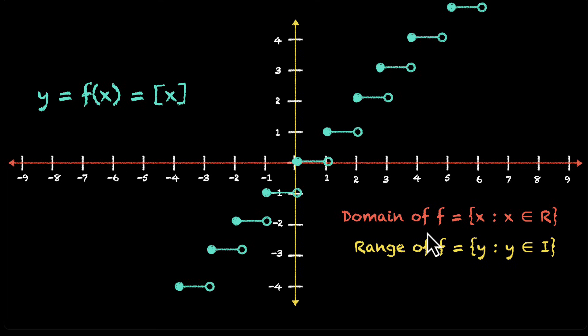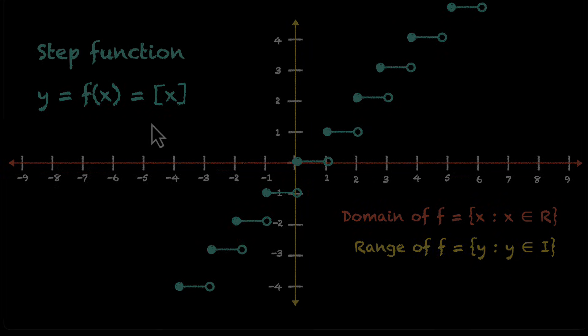And with this, we have the domain and range of the greatest integer function. And because the graph of this function looks like a staircase, this function is also called the step function.